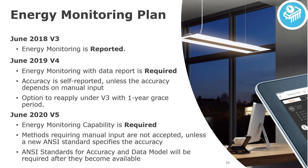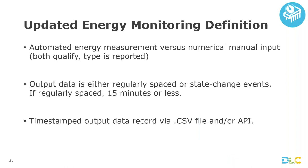Here are the main points in the updated energy monitoring definition. First, there is a distinction between automated energy measurement versus numerical manual input. This year both types will qualify, but next year the numerical manual input method would drop off unless there's a new standard to define its accuracy. This addresses the concern that efficiency programs have noted: when manual input is required to make energy monitoring work, it often doesn't get done. Automated systems will definitely continue to be qualified next year and going forward. The second part is that output data is either regularly spaced or state-change events, and if regularly spaced the spacing is 15 minutes or less.